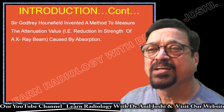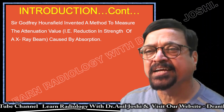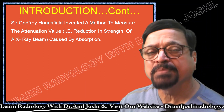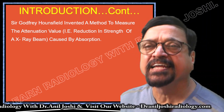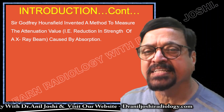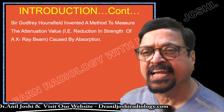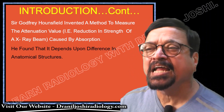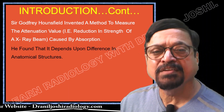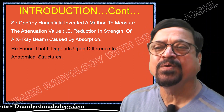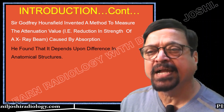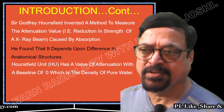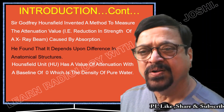Sir Godfrey Hounsfield invented a method to measure the attenuation value — that is, the reduction in strength of an X-ray beam caused by absorption. Every tissue will have a specific attenuation value that is consistent every time, and that will be reflected on the grayscale according to the CT value — the Hounsfield Unit. He found that it depends on differences in anatomical structure: if the anatomical structure is different, it will have a different CT value, a different attenuation value, and a different grayscale position.